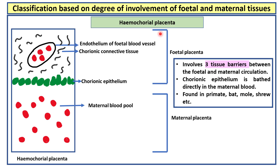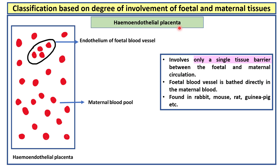Hemochorial placenta involves three tissue barriers between the fetal and maternal blood. In this case, uterine epithelium, endometrial connective tissue, and endothelium of maternal blood vessel are all lost. The chorionic epithelium is bathed directly in the maternal blood. This is found in primates, bat, mole, shrew, etc. Hemoendothelial placenta involves only a single tissue barrier. Here, the fetal blood vessel is bathed directly in the maternal blood. This is found in rabbit, mouse, rat, guinea pig, etc.